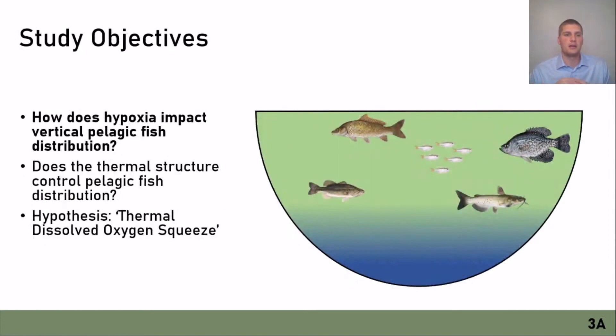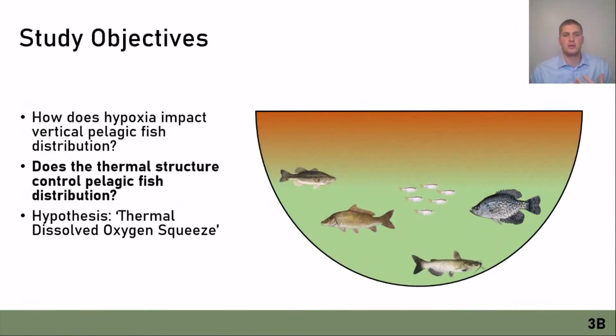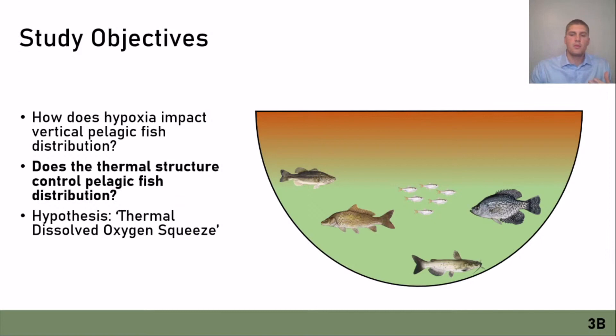I'm going to focus on the fish side of this study, given time constraints. The objectives regarding fish were to look at how hypoxia would alter their distribution throughout the water column. The idea is that hypolimnetic hypoxia is forcing fish out of their preferred habitat, and stratification is also forcing them out of their preferred epilimnetic habitat. When you combine both of these, their habitat is going to be reduced and they'll be squeezed into a confined area within the lake. Several past studies have referred to this as the thermal dissolved oxygen squeeze — it limits their habitat and increases species overlap.